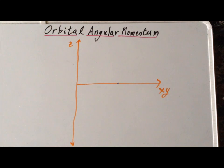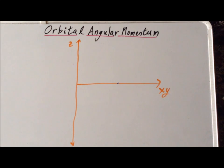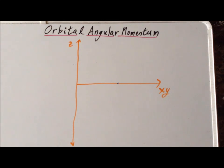Hello. In this video, we are going to be sketching a vector diagram so that we can visualize the magnitude of the orbital angular momentum and the magnitude of the z-component of the orbital angular momentum.